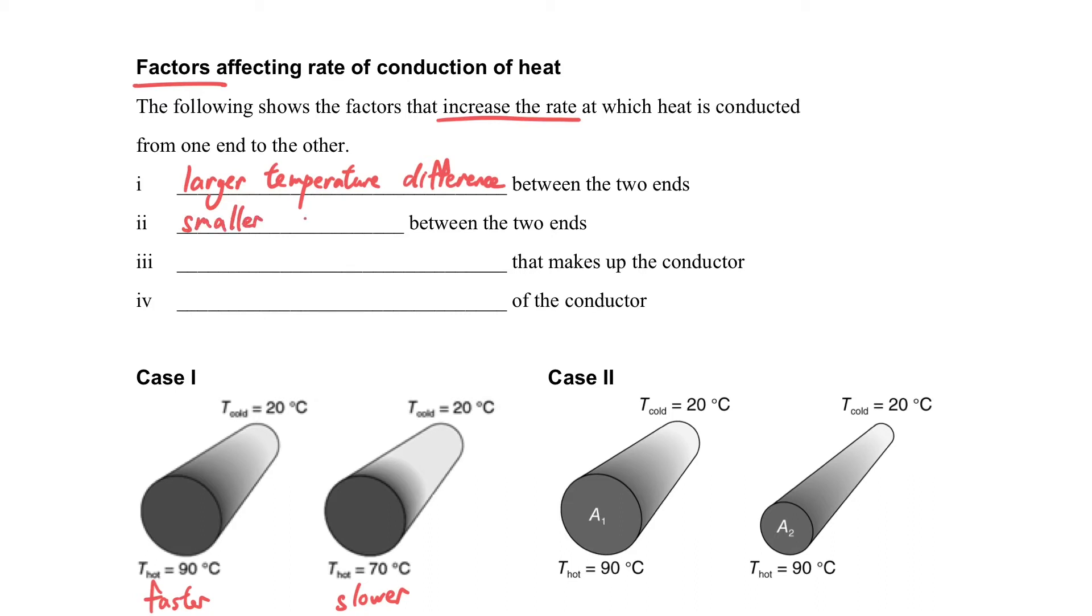And the other is the smaller distance between the two ends. And the other factor is about the material. If we use a better conducting material, then the rate of the heat transfer through conduction will be faster.